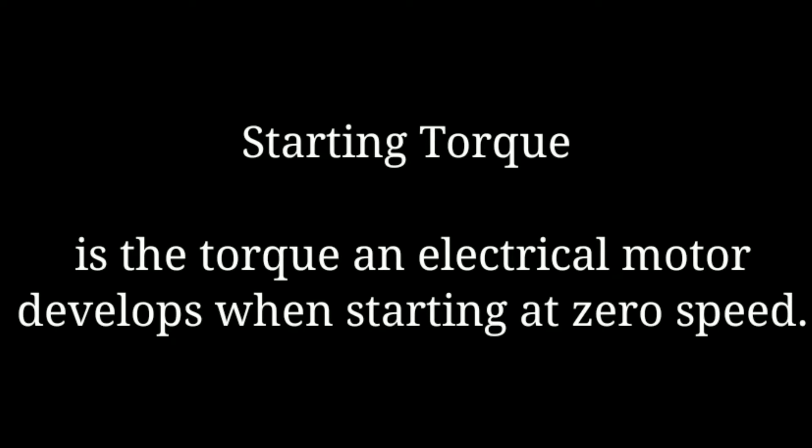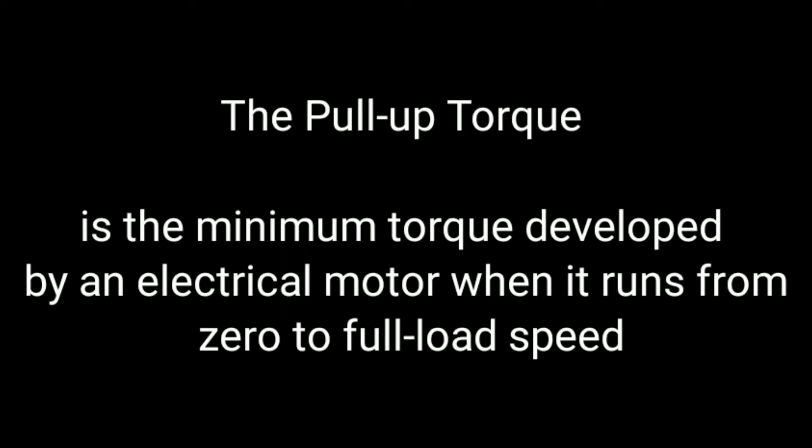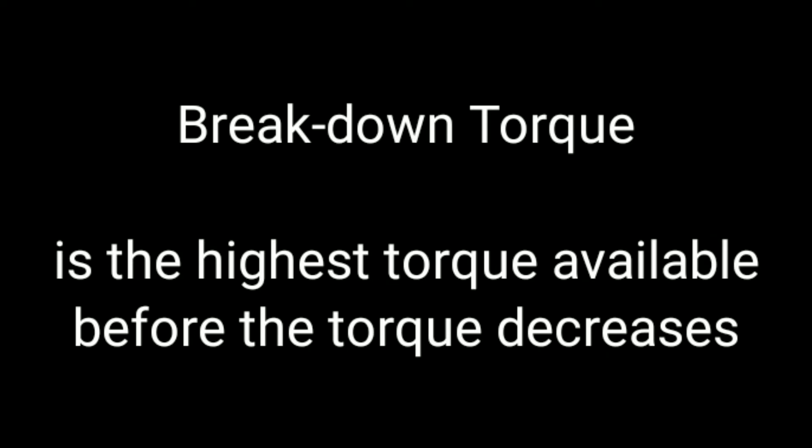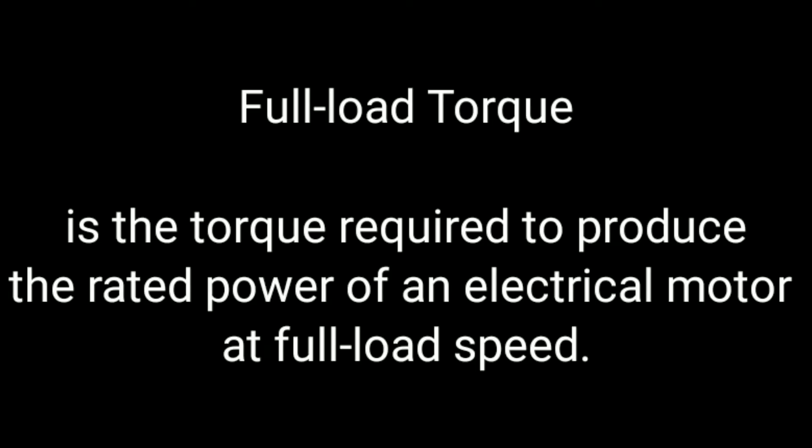There are different types of torque. First, starting torque is the torque an electrical motor develops when starting at zero speed. Second, pull-up torque is the minimum torque developed by an electrical motor when running from zero to full-load speed. Third, breakdown torque is the highest torque available before the torque decreases.